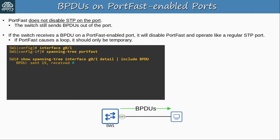Finally, let's cover BPDU Filter — we'll just take a quick look because this is a protocol that most people do not recommend. BPDU Filter blocks ports from sending BPDUs. But unlike BPDU Guard, it does not disable a port if a BPDU is received. Exactly what it does when a BPDU is received depends on how you configure it. Like PortFast and BPDU Guard, BPDU Filter can be enabled per port or globally. The per-port command is 'spanning-tree bpdufilter enable' in interface config mode.